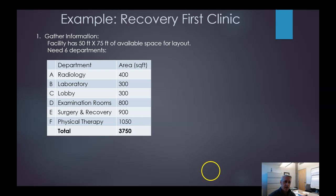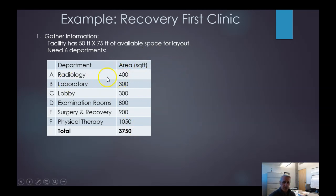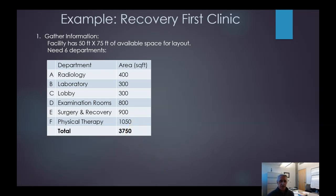We're also given the square footage needed for each department — this is an example you can follow in your book. We need roughly 400 square feet for radiology. The values are approximately 300, 300, 800, and so on, with physical therapy requiring the most space. We get a total value of 3,750 square feet.